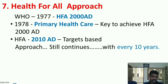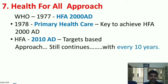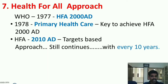The next is the health for all approach. In 1977, the 30th World Health Assembly planned 'Health for All by 2000.' In 1978, the Alma-Ata Conference and Declaration declared primary health care as the universal strategy to achieve that goal. Goals are set and modified every 10 years, with HFA 2010 and beyond continuing this approach.